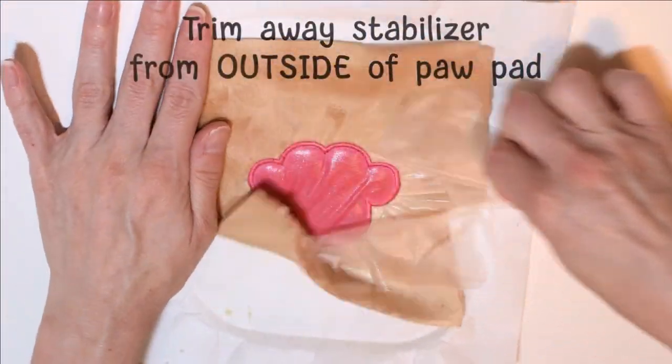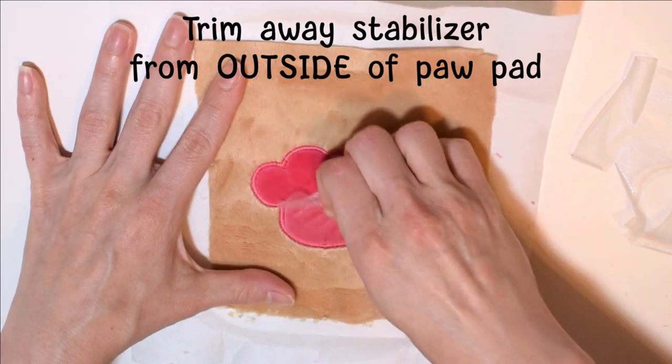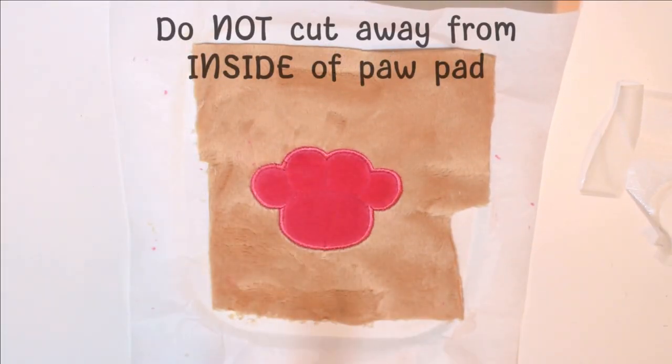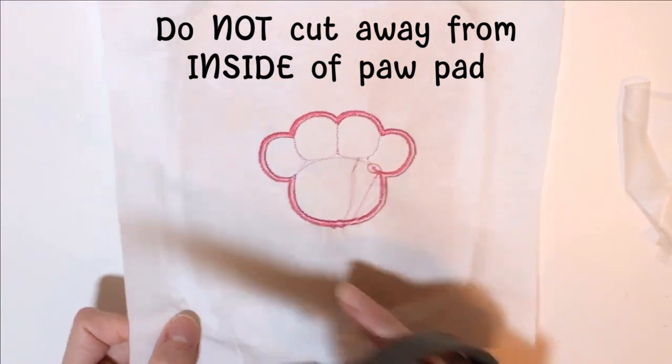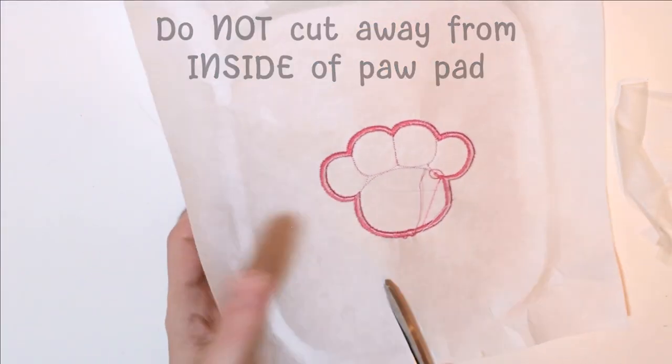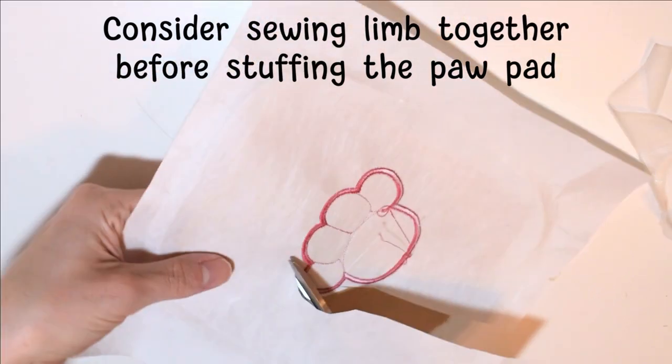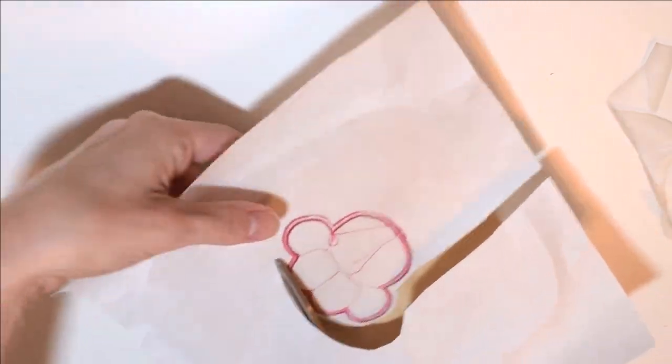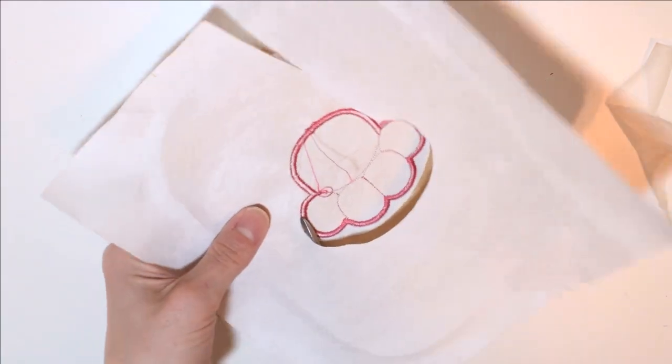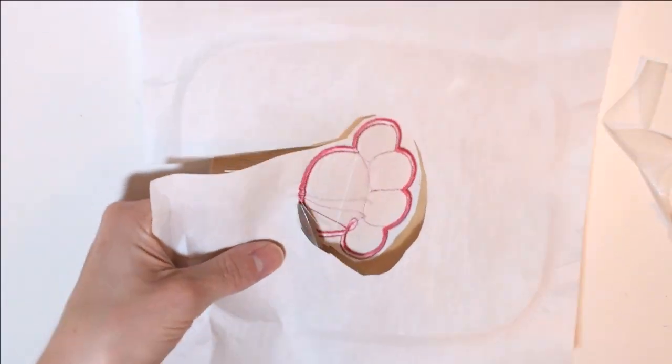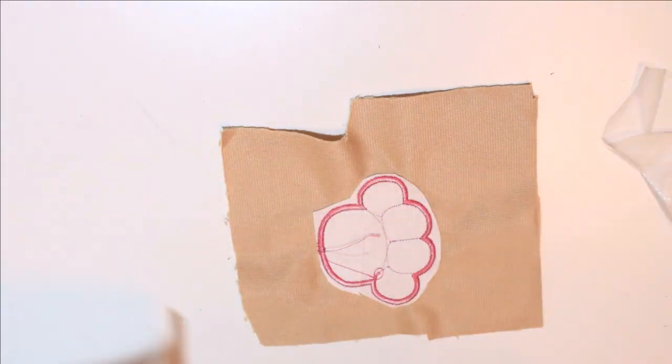Trim away the stabilizer from outside of the paw pad, but do not cut it away from the inside of the paw pad. Depending on your pattern, you may or may not want to sew this piece together first. The paw pads get pretty big so it can be awkward to sew around them after you stuff them when you're actually going ahead and sewing your plush together. Since this is just an example, I'm going to go ahead and stuff the beans now.